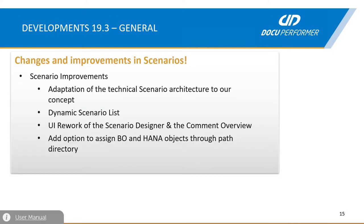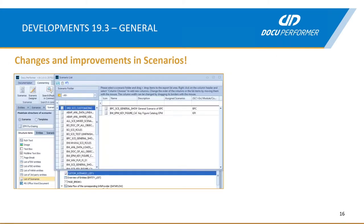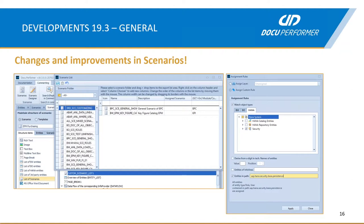We also worked on our scenarios. We did a special UI rework of the scenario designer and the common overview to have a clearer picture of what is going on. From now on it's also possible to create dynamic scenario lists — meaning if multiple scenarios are related to each other, you can now add a dynamic list of scenarios to a scenario. It's also possible to create assignment rules based on path directories for BO and HANA objects. Here you can see the area where you select scenarios to add to the dynamic list, and on the right side how the assignment rules via entities and paths are working, with the option to select the HANA path from which you would like to add the entities.